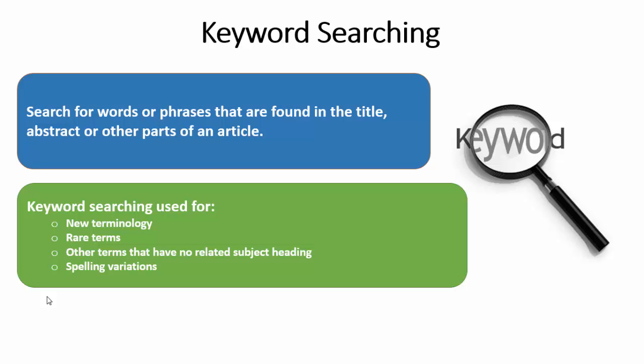Another time you might use keywords is when the term is rare — it doesn't appear a great deal. Another is when the term has no available subject heading. When a subject heading is available to describe your topic or concept, it's best practice to use it. But because a controlled vocabulary list does not always have every word or term available, you may have no choice but to use a keyword.